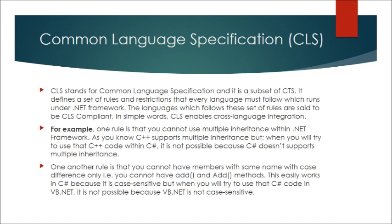For example, one rule is that you cannot use multiple inheritance within .NET framework. As you know, C++ supports multiple inheritance but when you try to use that C++ code within C#, it is not possible because C# does not support multiple inheritance. One another rule is that you cannot have members with the same name with case difference only, i.e., you cannot have 'add' and 'Add' methods.